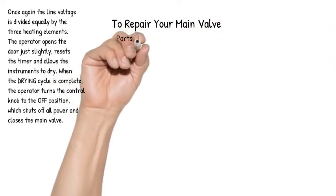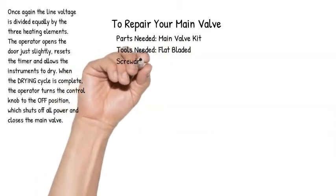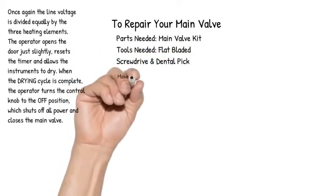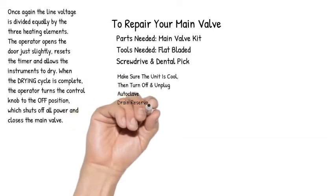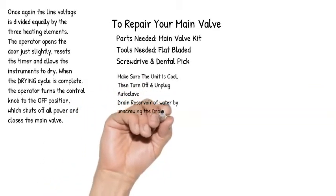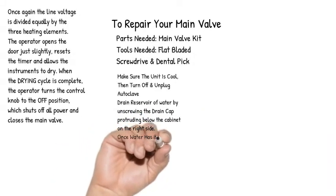To Repair Your Main Valve. Parts needed: main valve kit. Tools needed: flat bladed screwdriver and dental pick. Make sure the unit is cool, then turn off and unplug autoclave. Drain reservoir of water by unscrewing the drain cap protruding below the cabinet on the right side. Once water has been drained,